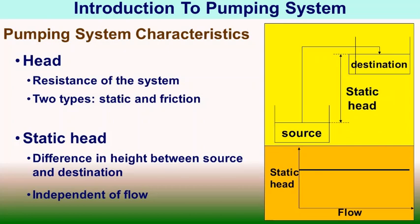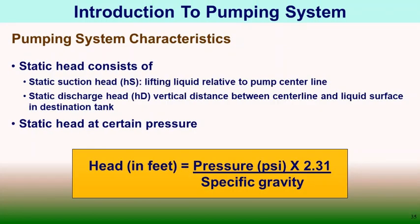Every fluid flow system imparts a system resistance, and pressure is needed to pump liquid through the system at a certain rate to overcome this resistance — also called the head. The total head is the sum of static head and friction head. Static head is the difference in height between the source and destination of the liquid and is independent of flow rate — it is a constant parameter. Static head consists of static suction head (positive if liquid level is above pump centerline, negative — also called suction lift — if below) and static discharge head.